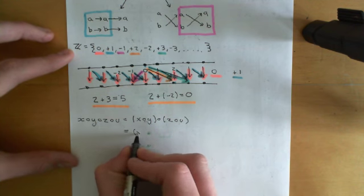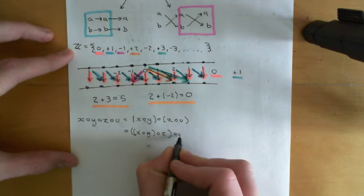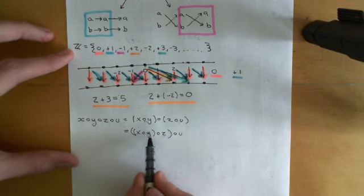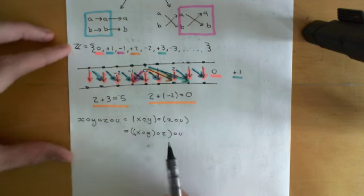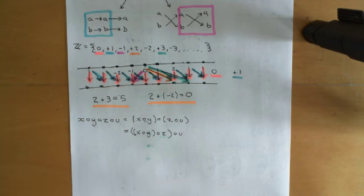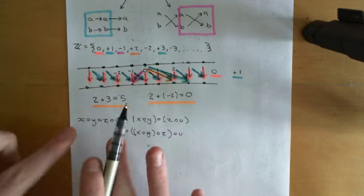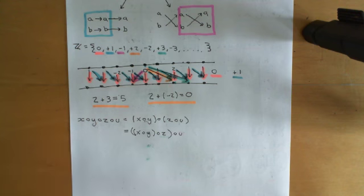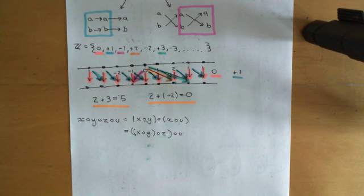As soon as associativity of three things holds true, this instantly holds true. You don't have to set this as a separate condition. Once you've got associativity of three things, you can prove that associativity of an arbitrary-length string of elements composed with one another holds true.